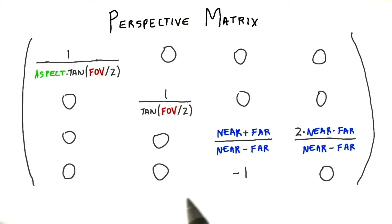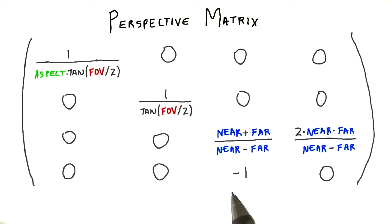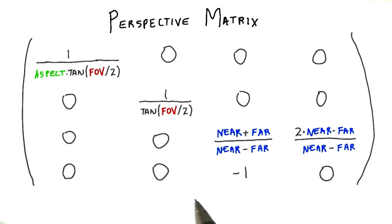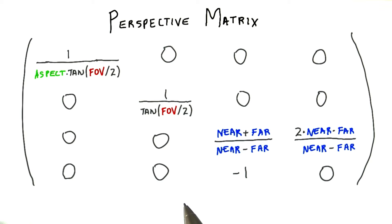I'm not going to derive this projection formula here. Most good 3D graphics texts run through this process. Also be aware that for some formulations, the near and far values are negative, since you're traveling down the negative z axis. The one headache of keeping things in a right-handed system is this whole 'plus z axis points at the viewer' problem.